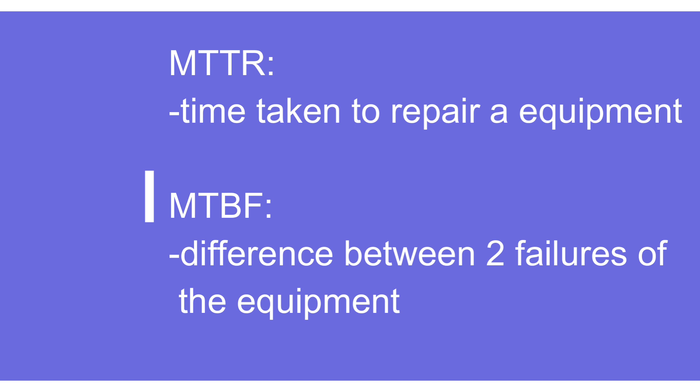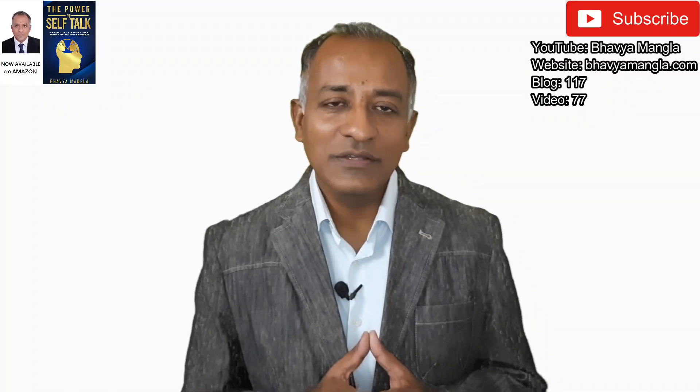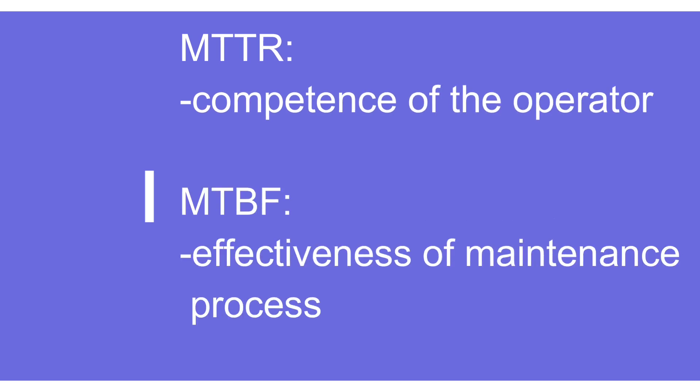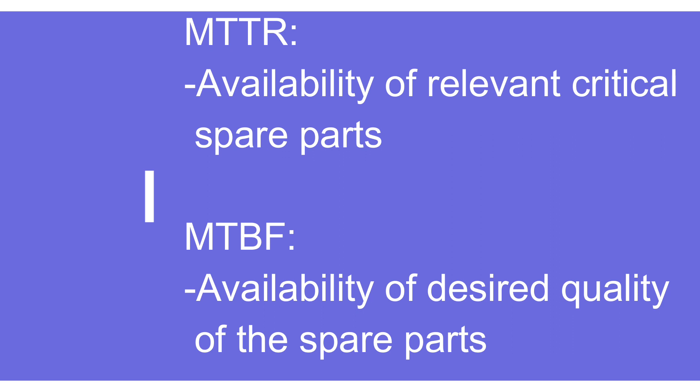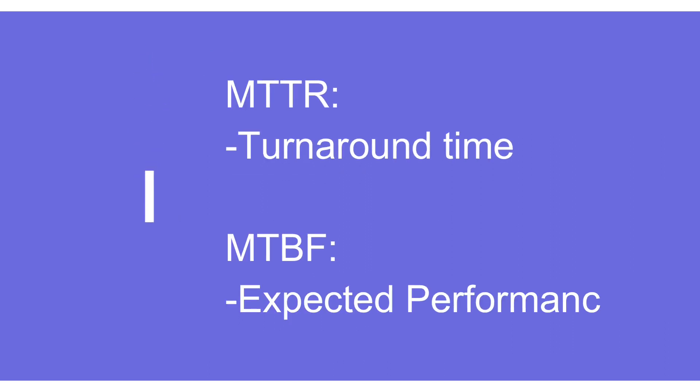MTTR reflects the competence of the people working on the machine — how quickly they can repair it — whereas MTBF reflects the effectiveness of the overall maintenance process. MTTR also speaks to the availability of relevant critical spare parts, because without those parts the machine cannot be repaired and restarted. MTBF, on the other hand, talks about the desired quality of those spare parts — whether they are of good quality. In summary, MTTR relates to turnaround time and MTBF relates to expected performance.